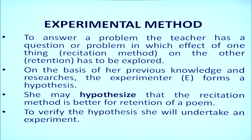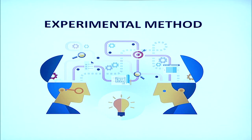The experimenter defines, based on previous experiments, a probable answer: the psychologist may hypothesize that recitation method is better for retention of a poem compared to learning it silently. To verify the hypothesis, she will undertake an experiment. First, the psychologist will identify the independent and dependent variables — this is very important to understand in the context of experimental method.